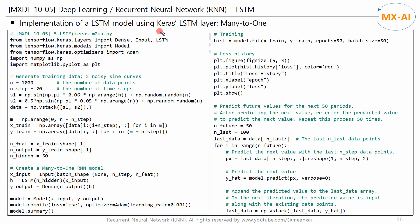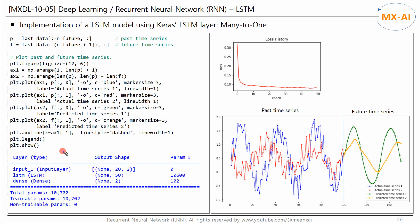Next, let's implement this many-to-one LSTM model using Keras' LSTM class. Import the Keras LSTM class and create a recurrent layer using this class. The rest of the code is all identical to the previous code. The number of trainable parameters in this model is also 1,702 — the same as the previous code — and the past and future time series results are similar to the previous code.